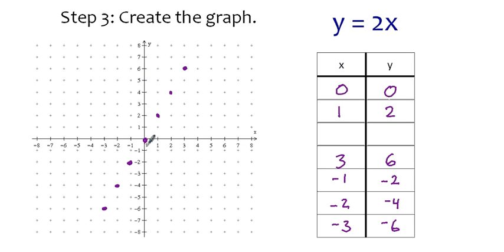Wonder what happens if we choose a point in between these two dots, like 0.5. Interesting. 2 times 0.5 gives 1.0. Over 0.5, up 1.0. Look at that, right in between those two dots.